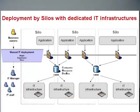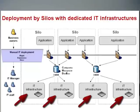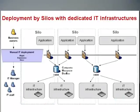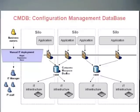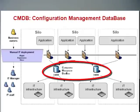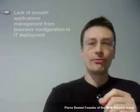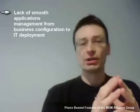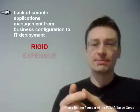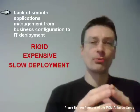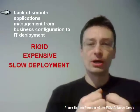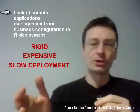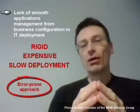The functional silos on their applications lead to an IT deployment by silos with dedicated IT infrastructure. To regain control of the crossing between applications and IT infrastructures, most of the time a company must have several CMDBs — in other words, several configuration management databases. Obviously, this lack of smooth application management from business configuration to IT deployment is a significant issue. This situation is rigid, expensive and leads to slow deployment. Furthermore, as a lot of manual work is done by IT staff without real reporting open to business, this is an error-prone approach.